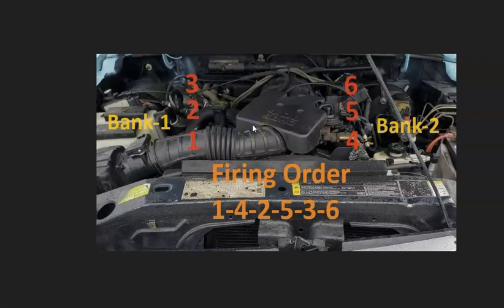If you need to know which side is bank one and bank two, bank one is going to be on the left passenger side, and bank two is going to be on the right on the driver's side. If you ever need to know which side is bank one or bank two on any engine, just find the number one cylinder and that side is going to be bank one and the opposite is going to be bank two.